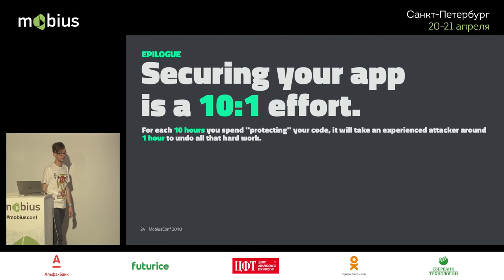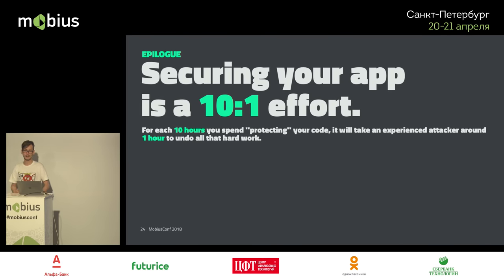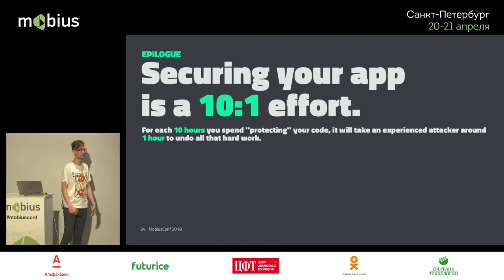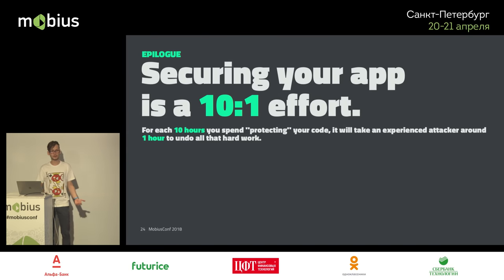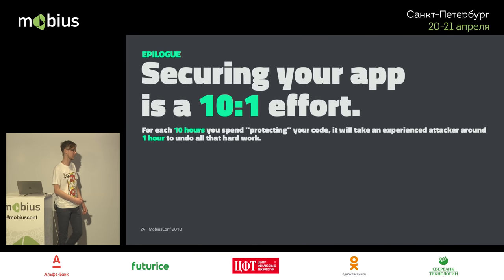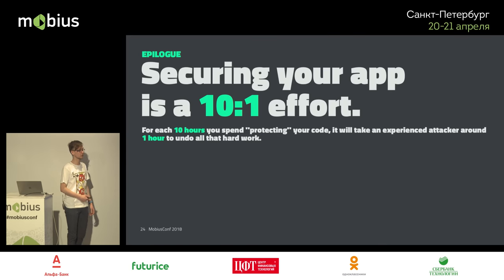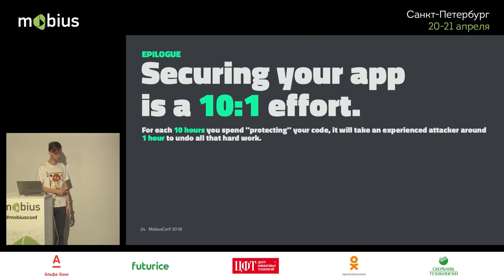Securing your app is a 10-to-1 effort ratio. For every 10 hours you spend trying to secure your app from a reverse engineering standpoint, an advanced attacker will take one hour — maybe less — to reverse all those attempts, because they already have or know how to build automated tools. You need to think: is it really worth it? Do I have anything in my app that isn't interesting? Maybe move it to the server side. You need to find a golden ratio, because attackers have all the time to attack, and you don't — you need to write features and fix bugs.